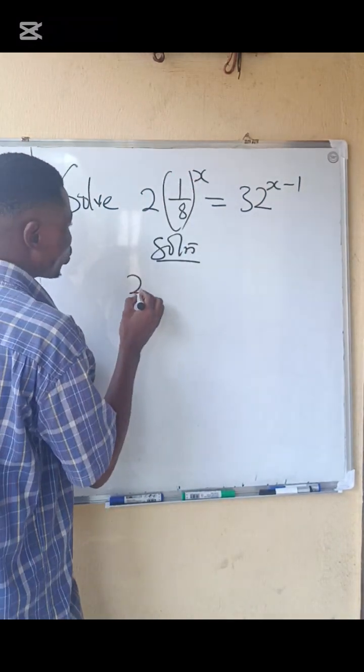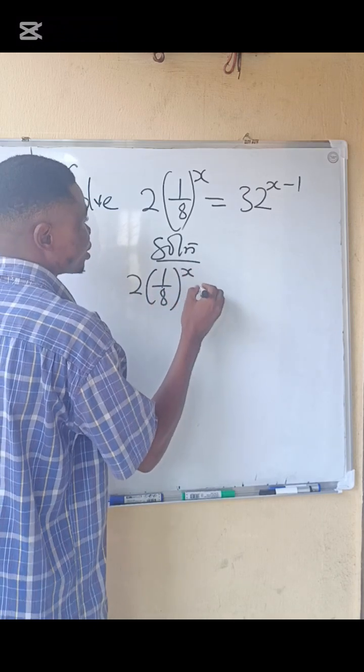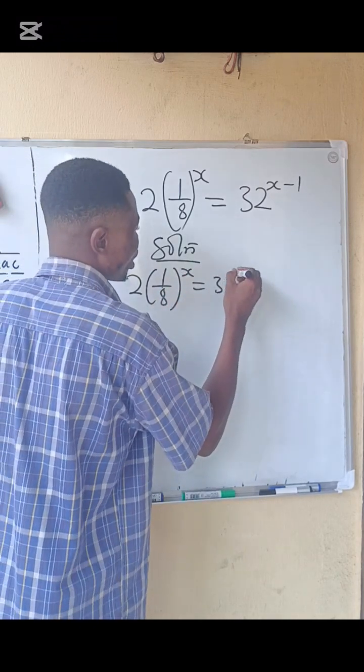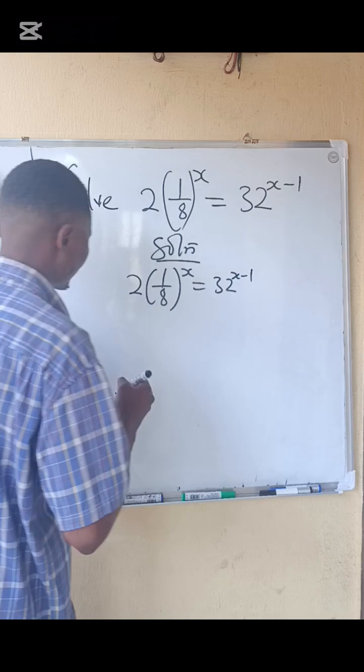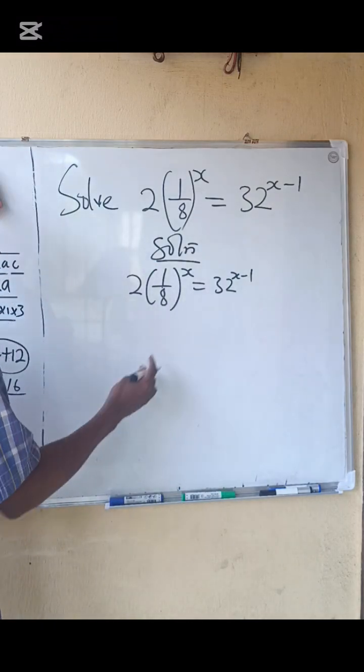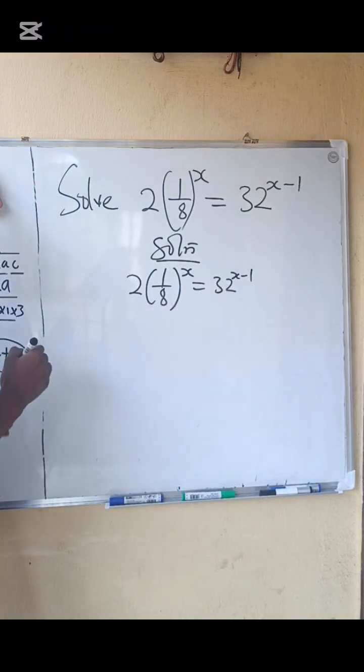We have that 2 into 1 over 8 power of x equals to 32 power of x minus 1. So what do we do? Let's reduce this to a common base.